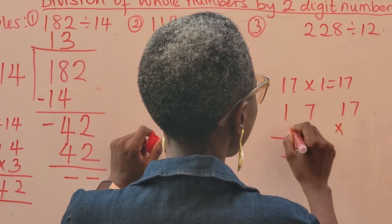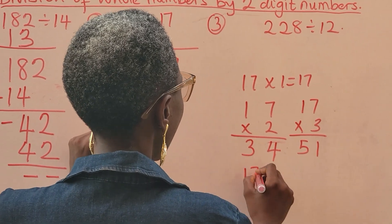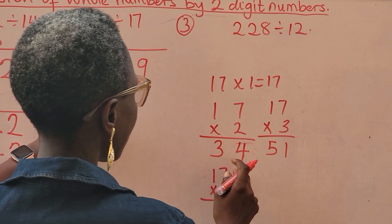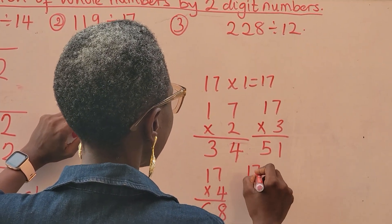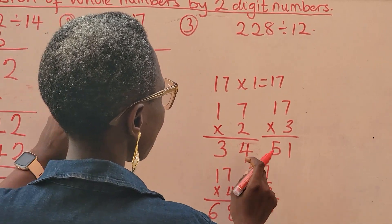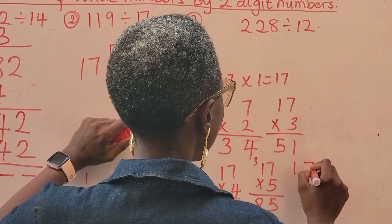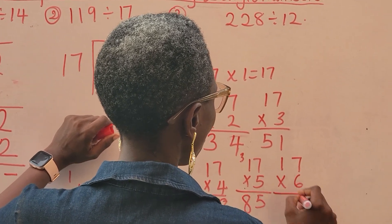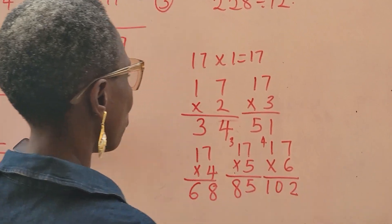Then 17 times 3. This is 21, 51. 17 times 4. Don't worry. I'm still going to this. 17 times 4. This is 28. That's 68. 17 times 5. This is 35. This is 5. That's 85. I'm still far. Then I go to 17 times 6. 7 times 6 is 42. 6 times 1 is 6 plus this. 102. I am still going.